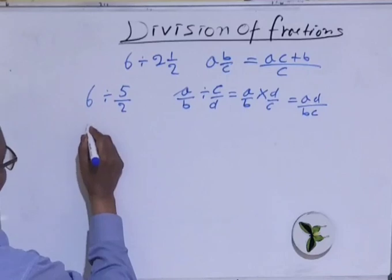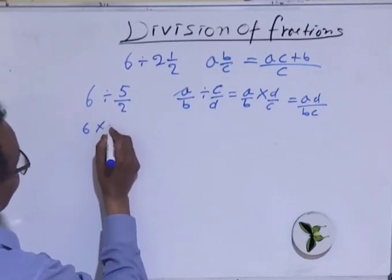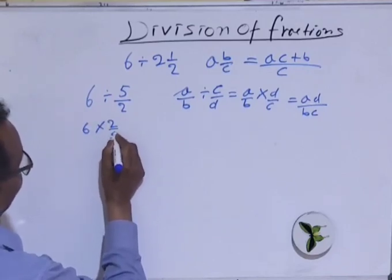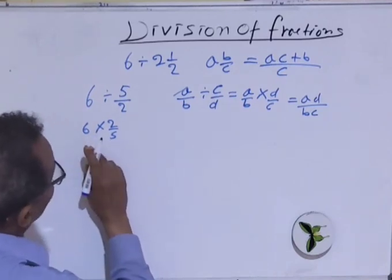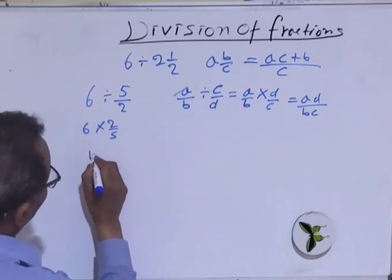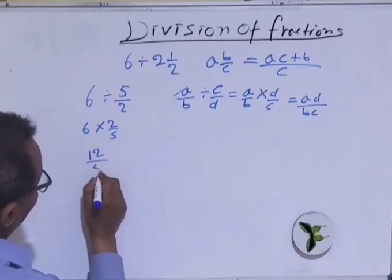And this will give A times D over B times C. Let's do it the same way. So 6 times 2 over 5. So 6 times 2 is 12 over 5.